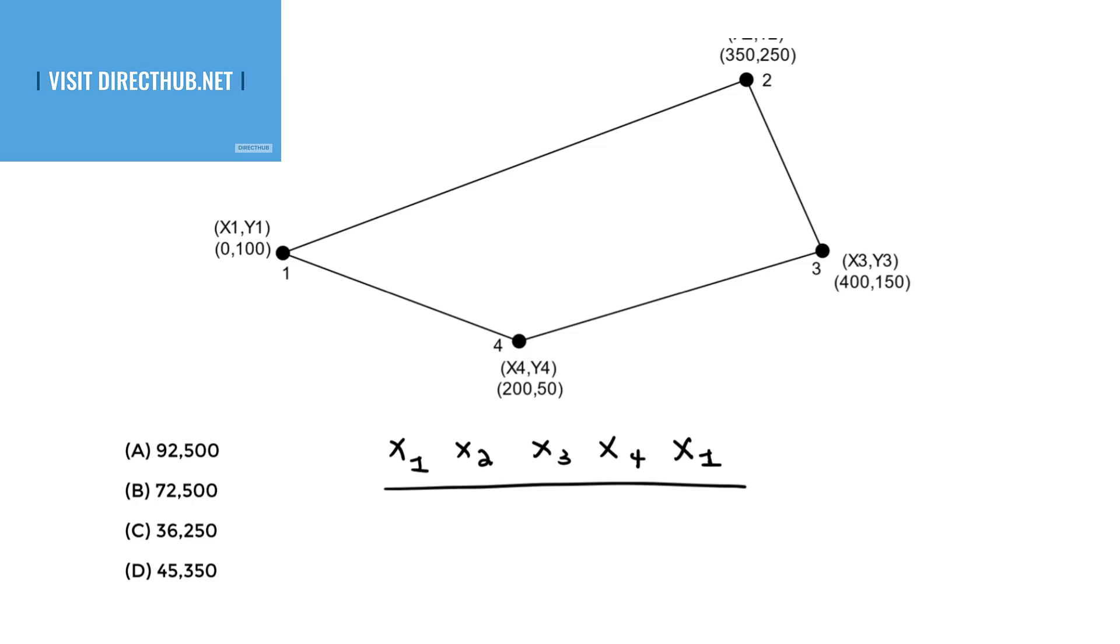I'm going to denote two rows, the top row and the bottom row. The bottom row is going to be for the y values. So y1, y2, y3, y4, then we end at y1. So we have these two rows.